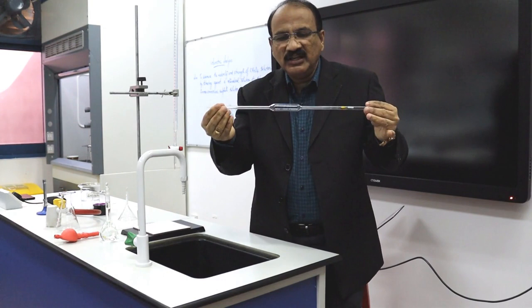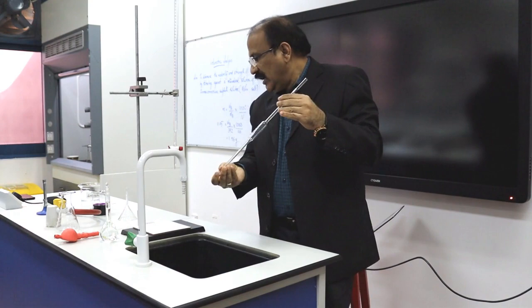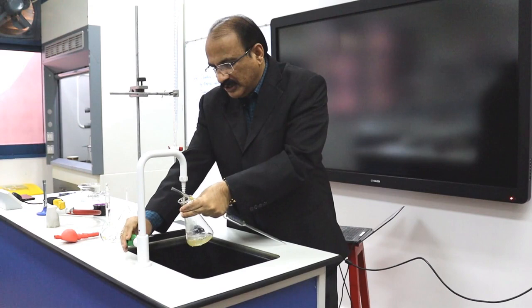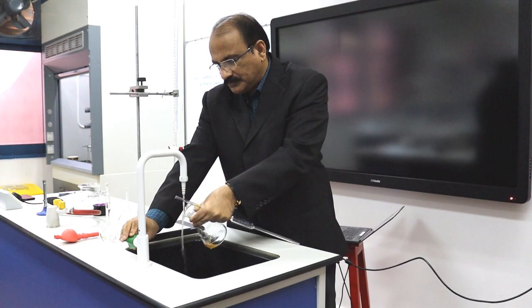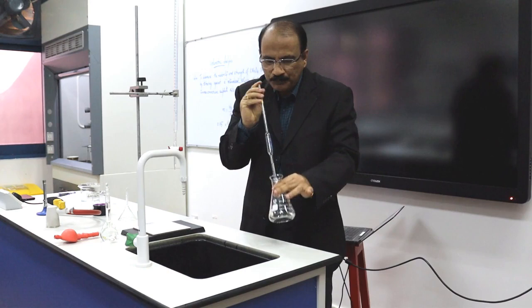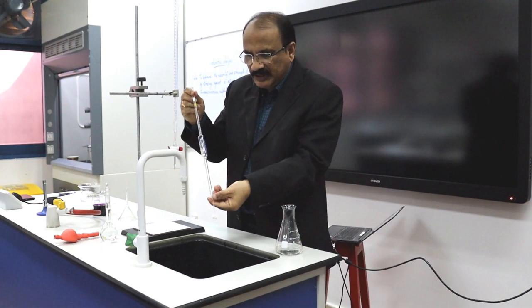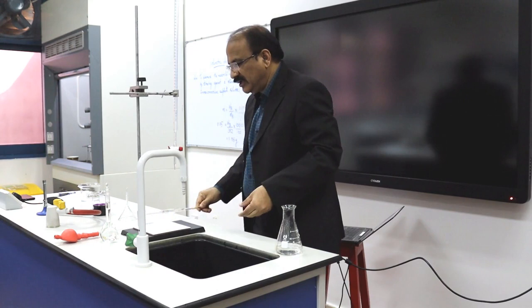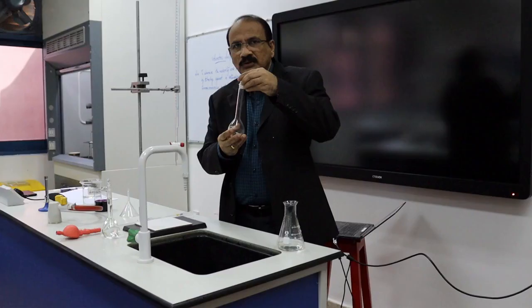The second apparatus is a pipette. The capacity of this pipette is 20 ml. For washing the pipette, collect a little bit of water in the conical flask. This is the way to wash the pipette. Drain it into the sink. Keep the pipette in such a way that it will not be disturbed.